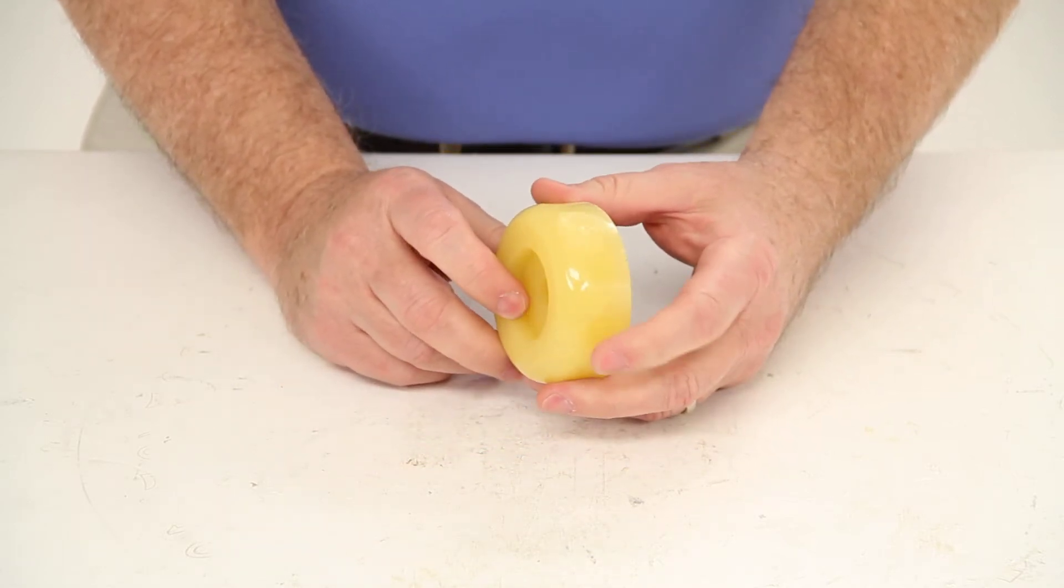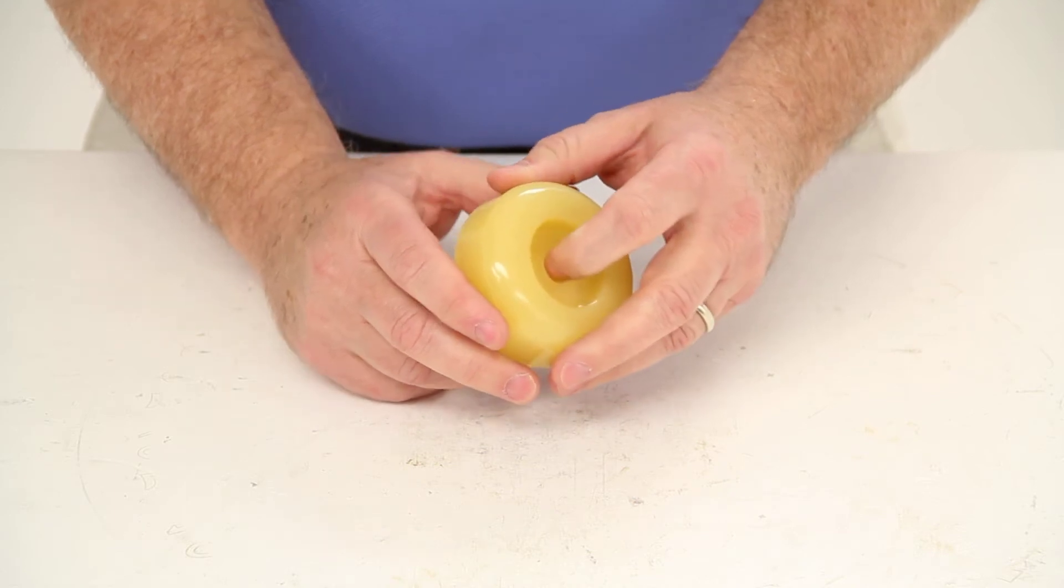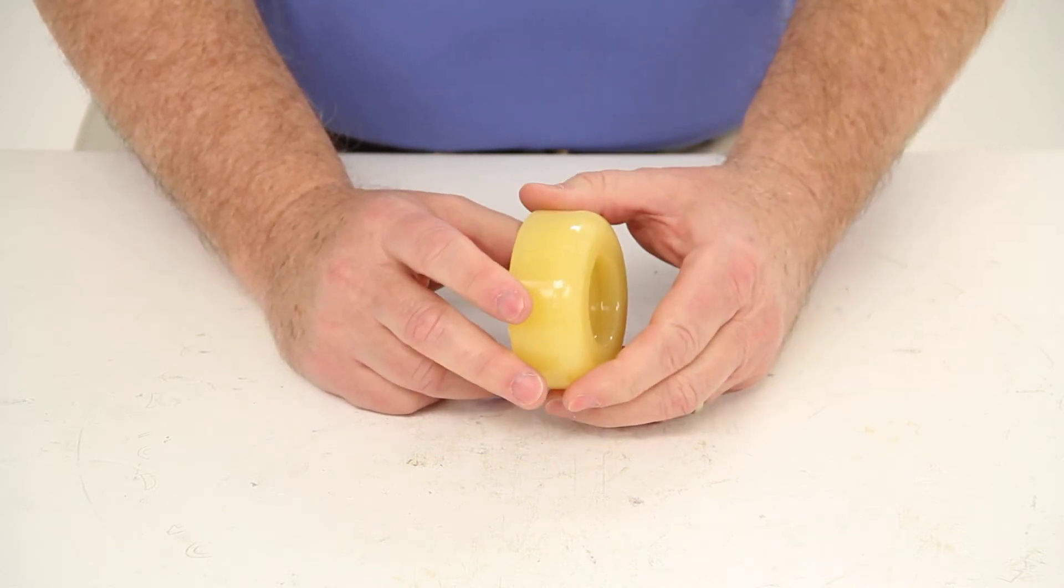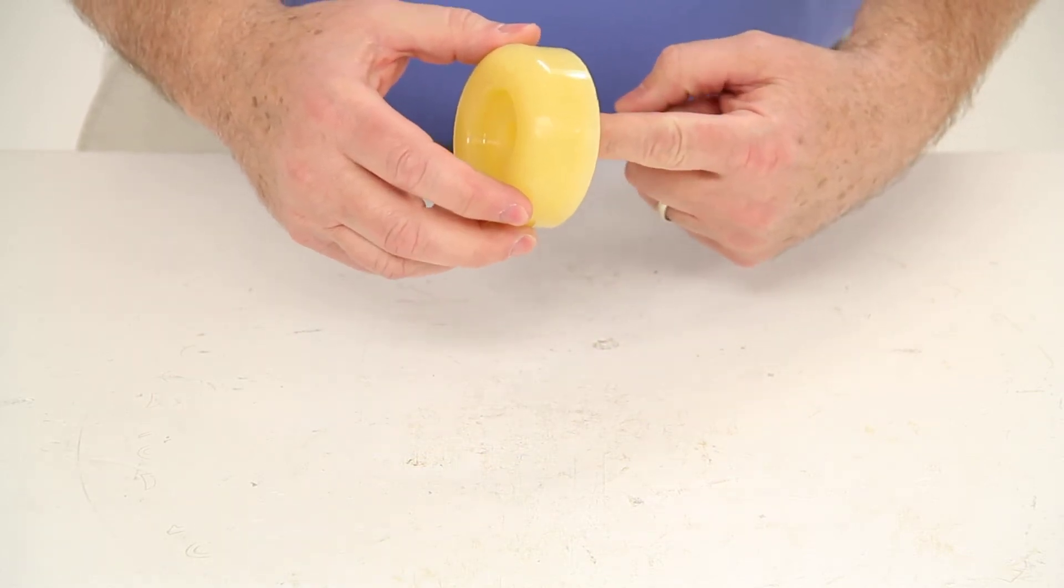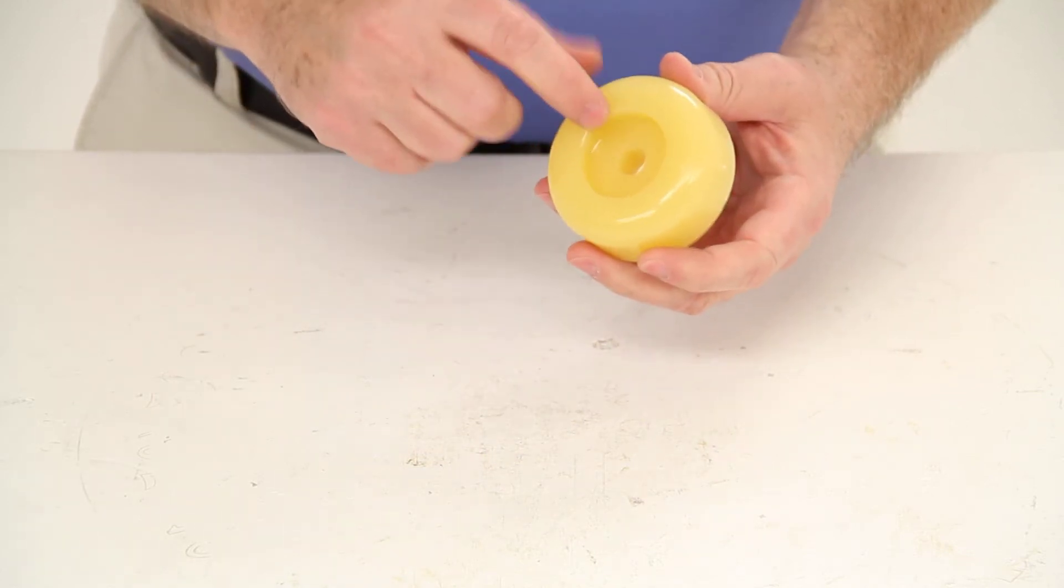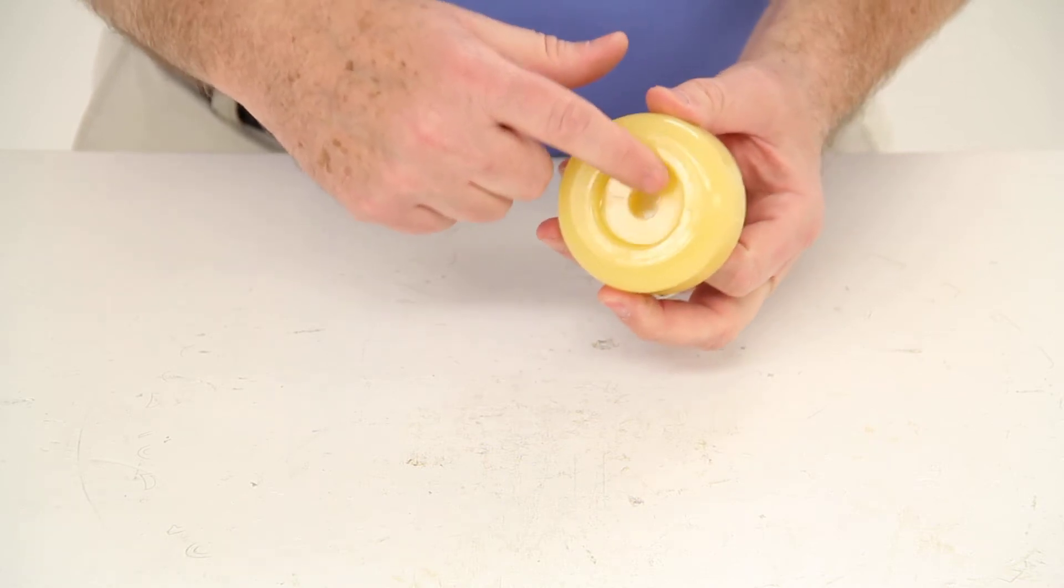This end cap will install on the same brackets that your keel, spool, or bow rollers are mounted to. You just attach each end cap to the shaft on the outside of the roller, and then secure the end cap in place with a cap nut or a pal nut.